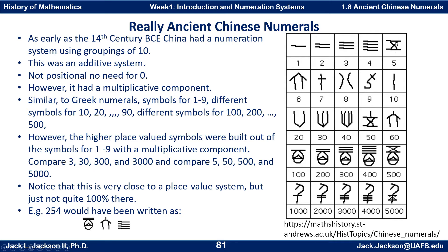For 50, you just added a vertical element to it. For 60, you add a vertical element to that. For 100, this symbol — kind of like a circle with a triangle in it — was added to the symbol for one to make 100. That symbol added to the symbol for two makes 200. So basically, this symbol says 'multiply by 100.'